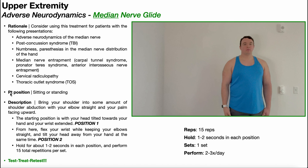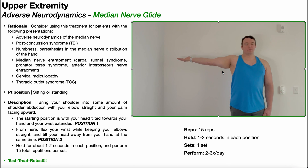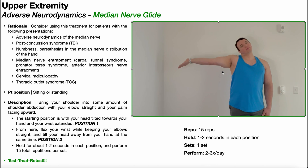To perform the median nerve glide, the patient will be positioned either in sitting or standing. You're going to bring your shoulder into some amount of shoulder abduction with your elbow straight and palm facing upward — so bringing the arm up out to the side, elbow straight, palm facing upward. The starting position is with your head tilted toward your hand and your wrist extended. So here the wrist is extended and the head is tilted towards the hand — this is position one.